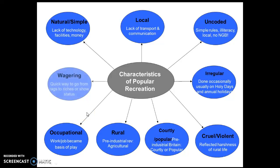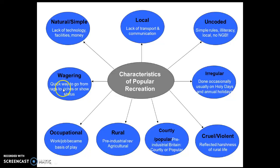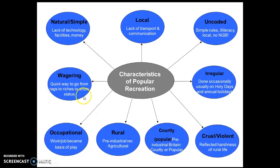The final characteristic is wagering. Wagering is hugely important because any money the poor or peasants had, it allowed them a way to go from rags to riches. On the other side, the upper class or courtly also liked wagering — gambling or betting. Wagering is the exam terminology you must use, as it allowed the upper class to show their social exclusivity and status.